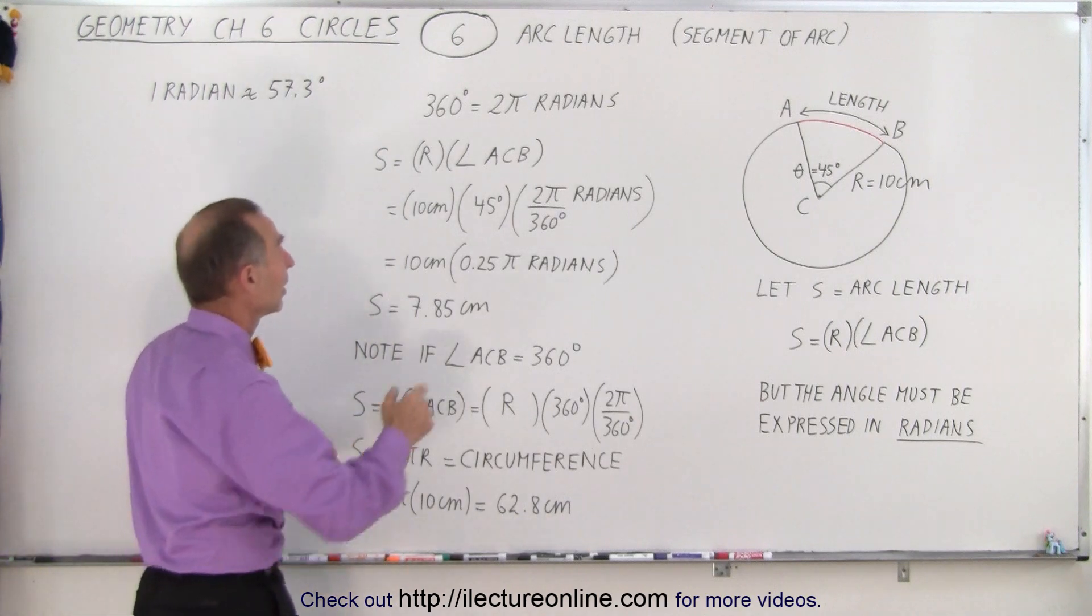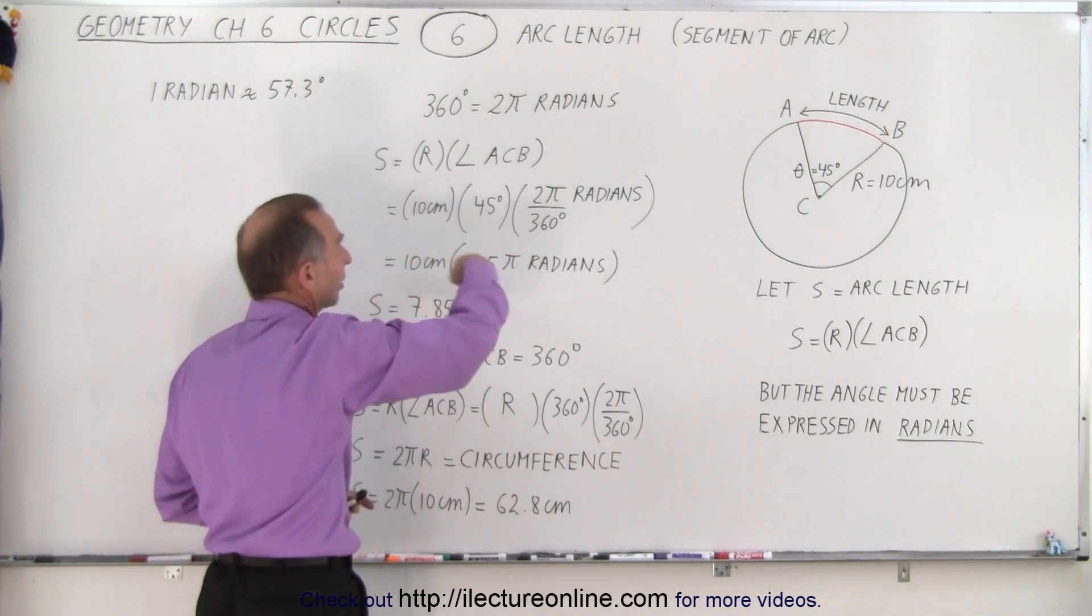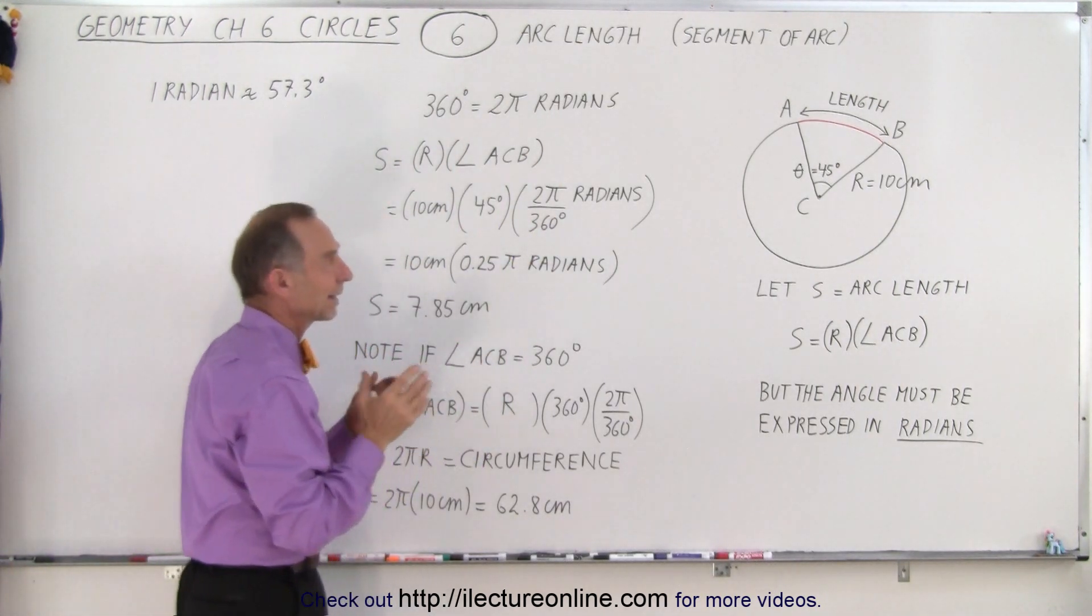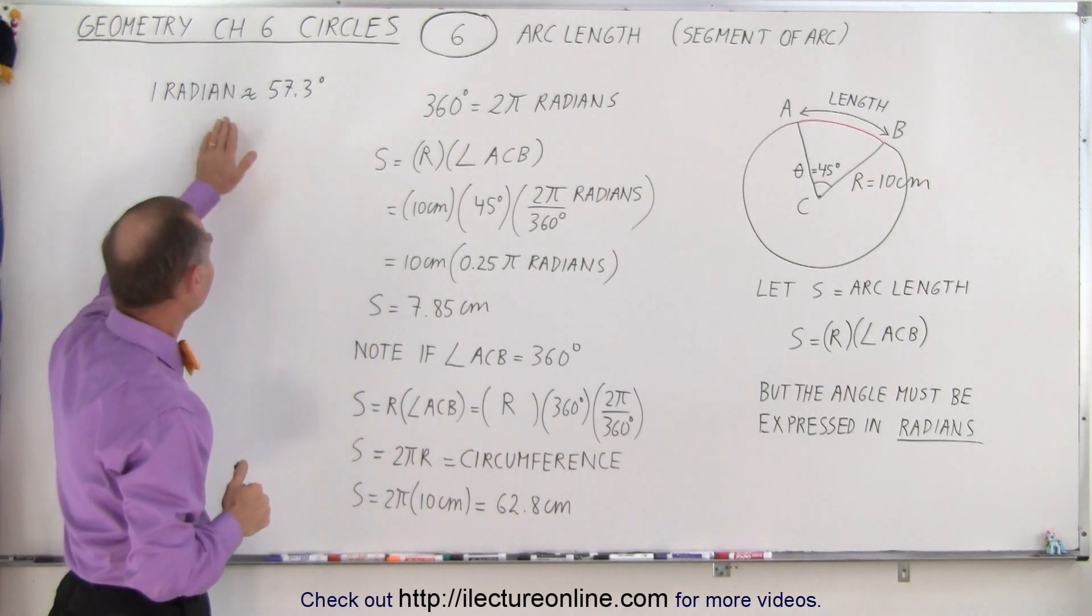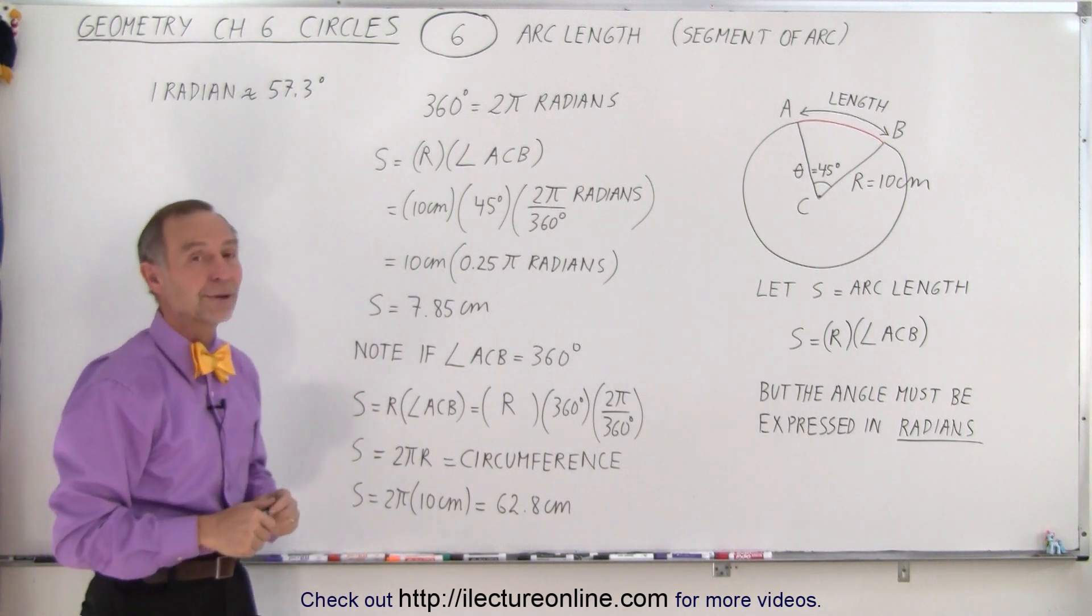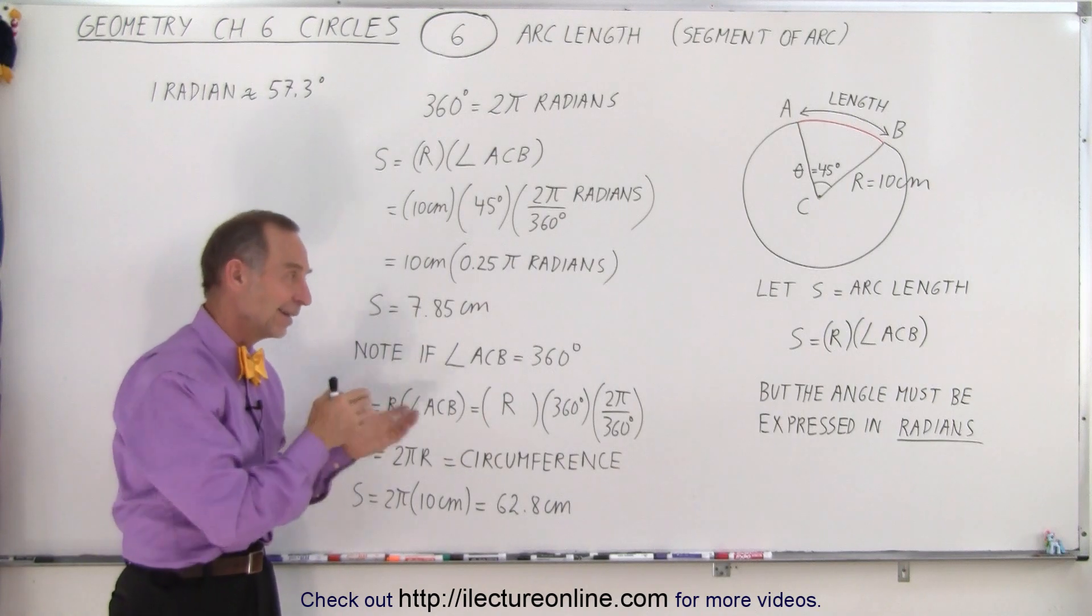If it's less than 360 degrees, then you have to use this methodology right here to calculate the length of that arc. And so make sure you convert the degrees to radians. And that is how it's done.